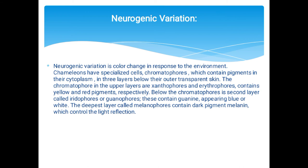Neurogenic variation is color change in response to the environment. Chameleons have specialized cells called chromatophores, which contain pigments in their cytoplasm. They have three layers below their outer transparent skin: the upper layer chromatophores are xanthophores (yellow pigment) and erythrophores (red pigment). Below is a second layer called iridophores or guanophores, containing guanine appearing blue or white. The deepest layer, melanophores, contains dark pigment melanin, which controls light reflection.